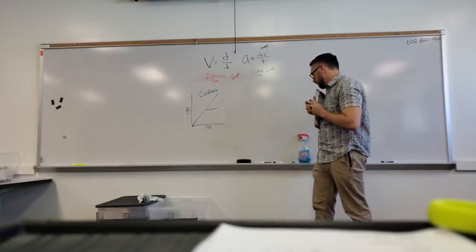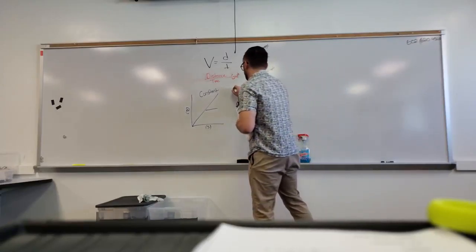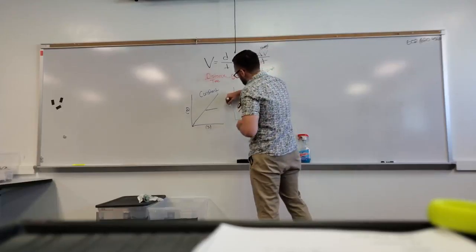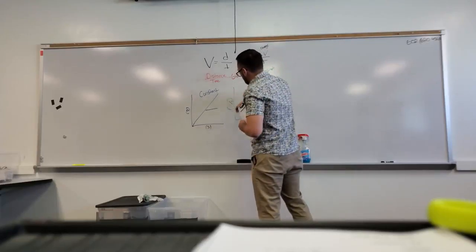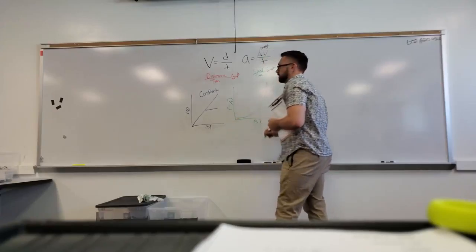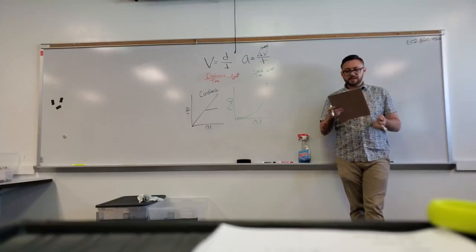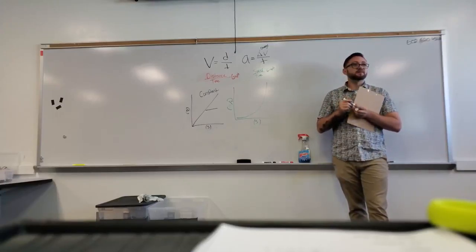Something that would not be constant might be something like this, whereas if I have my seconds and then I have my meters per second, it might look something like that. That's not constant. Does that kind of make sense?